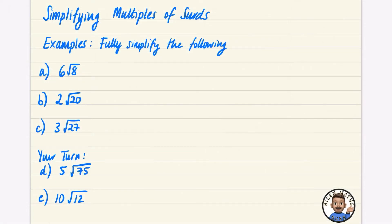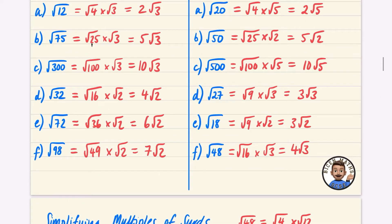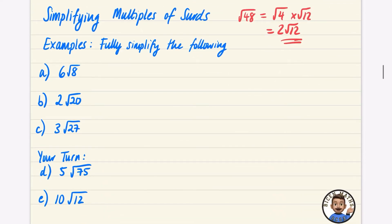In the previous video, something like the square root of 48 might be simplified as the square root of 4 times the square root of 12, which is 2√12. But this isn't fully simplified because √12 can also be simplified. If you reached that stage in previous questions, this video is really going to help — we're going to look at cases where more simplifying can still be done.